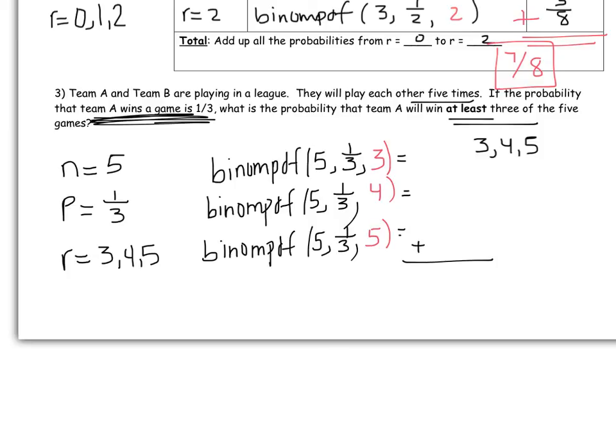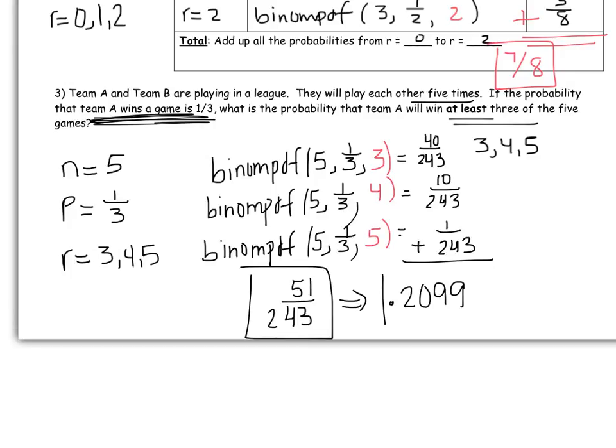For the first one I got 40 over 243. The second one I got 10 over 243, and the last one I got 1 over 243. So when I added them up, I got 51 over 243. So that's the fraction answer. Easiest way now, put that in the calculator, get the decimal. So 0.2099 is what I got for the decimal.